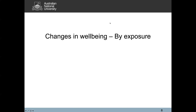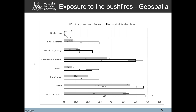We have multiple exposure measures — direct and indirect. Indirect exposure includes: friends or family had their property damaged or threatened, travel and holiday plans were affected, affected by smoke, or anxious and worried. Direct or self-reported direct effects include: being evacuated, property was damaged, or property was threatened. And then we have the location-based measure.